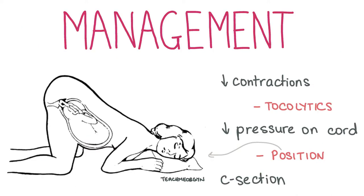Management of cord prolapse involves elevating the presenting part of the fetus back into the uterus manually, or filling the bladder to prevent compression of the umbilical cord. The umbilical cord itself must not be pushed back inside; rather it should be kept warm and moist to prevent vasospasm, with minimal handling. Tocolytics such as terbutaline may be administered to reduce contractions and delay delivery, thus preventing compression of the cord.